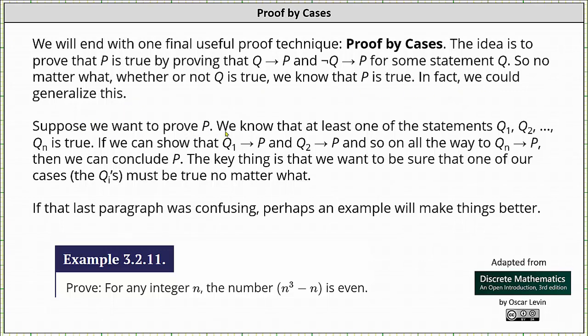Suppose we want to prove P. We know that at least one of the statements Q₁, Q₂ through Qₙ is true. If we can show if Q₁ then P and if Q₂ then P and so on all the way to if Qₙ then P, then we can conclude P. The key thing is that we want to be sure that one of our cases, meaning the Q sub i's, must be true no matter what.